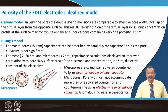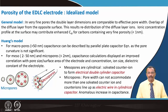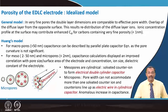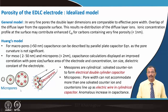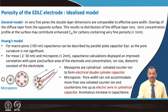Mesopores are cylindrical, so solvated ions form an electric double layer inside them acting as an electrical double cylinder capacitor. In micropores, the pore width cannot accommodate more than one solvated ion; counter ions line up and act like an electric wire in a cylindrical capacitor. In this case there is an anomalous increase in capacitance, so the capacitance value is dependent on pore size according to Huang's model.